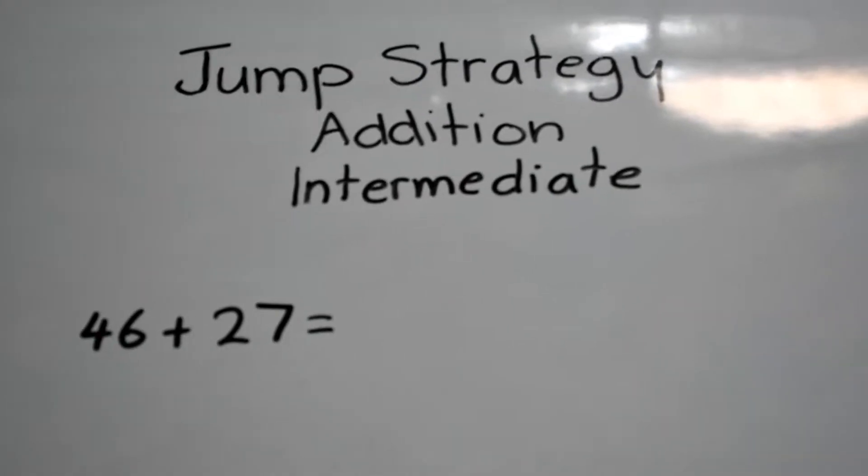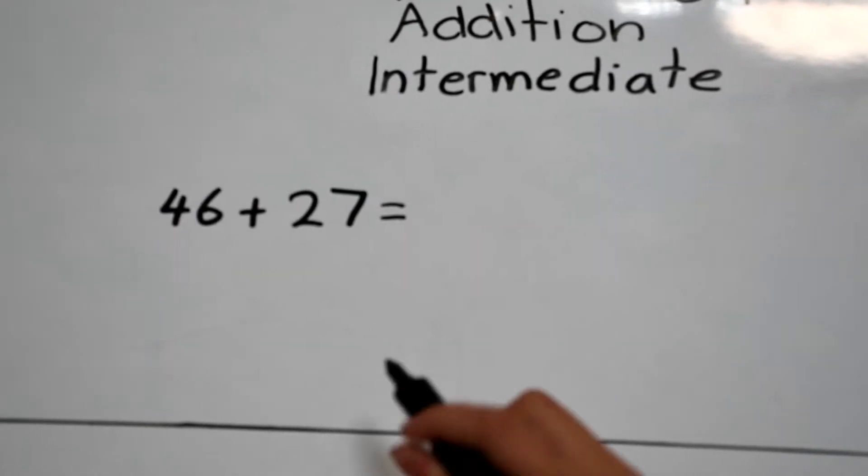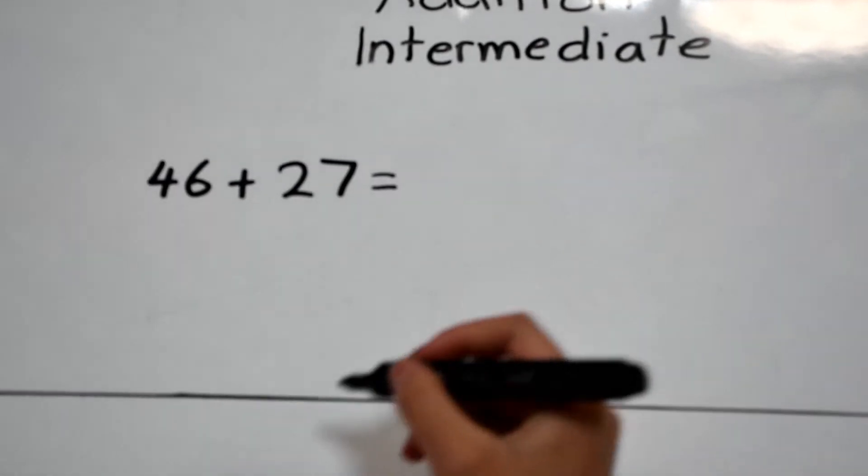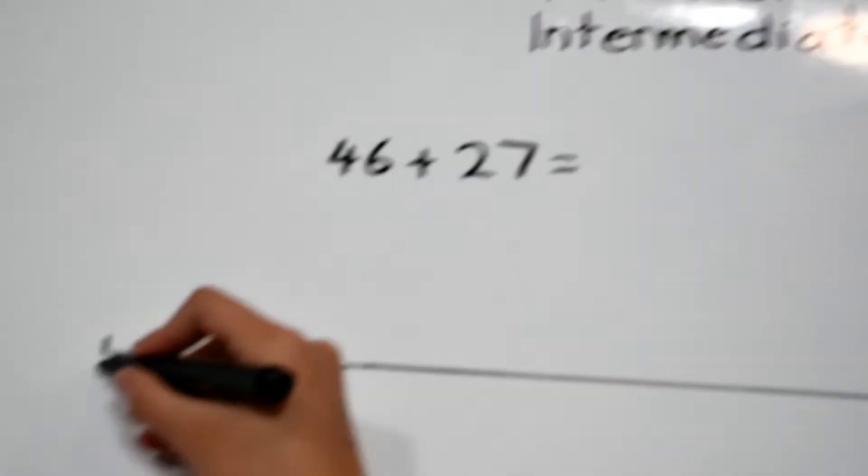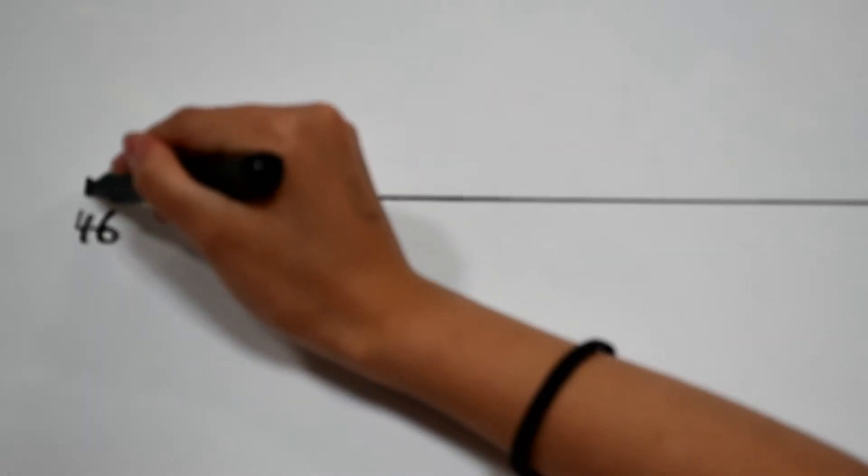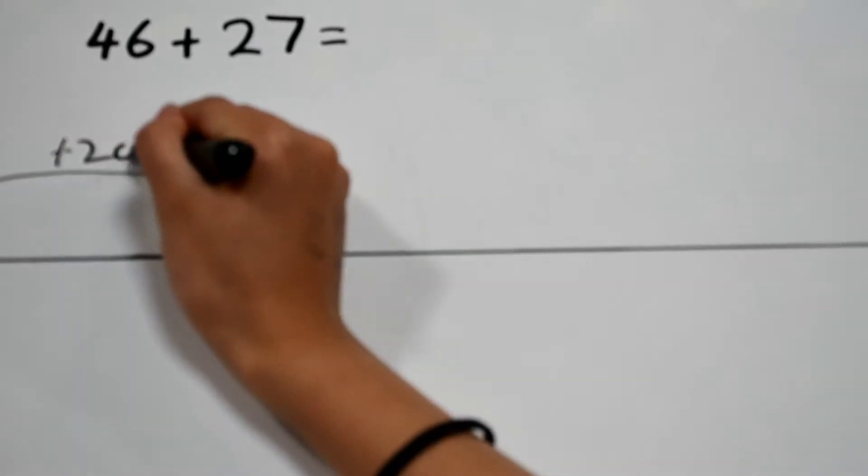This is the Jump Strategy for Addition Intermediate Mental Computation. Our sum is 46 plus 27. For addition, you've always got to start on the biggest number, which is 46. Now we're going to add 20, which is the tens.